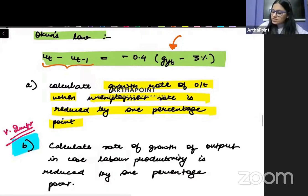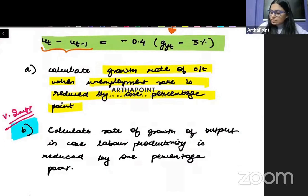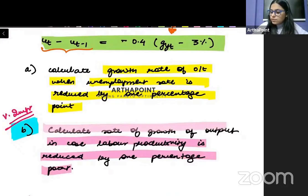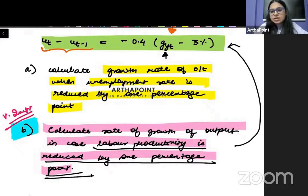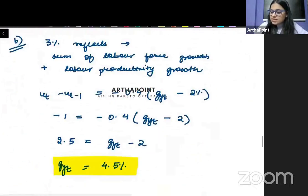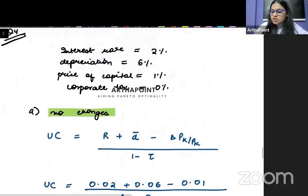So they'll say something like, your labor productivity is reduced by 1% point. What will happen to the growth rate of output? So how will this change? When your labor productivity is reduced by 1% point. So Okun's law relation we have to show with labor productivity. It is very important from the exam point of view. That's the next kind of question that can be asked in exam.